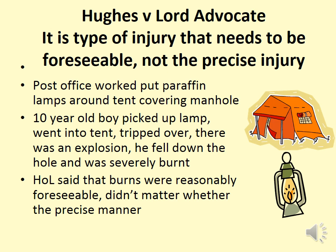You have to be able to guess what things could happen, but you don't have to foresee the exact injury — just the type of injury. This is seen in Hughes and Lord Advocate. A post office worker placed a paraffin lamp around a tent covering a manhole. A ten-year-old boy picked up the lamp, went into the tent, tripped, there was a huge explosion, he fell down the hole and was severely burnt. The House of Lords said the burns were reasonably foreseeable and it didn't matter whether the precise manner of injury was exactly known. If you mix a ten-year-old boy with a paraffin lamp and a deep hole in a tent, you know somebody's going to get burnt.